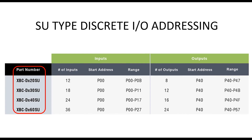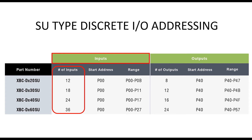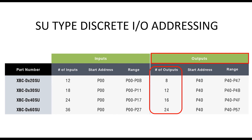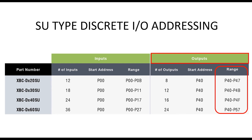Shown here are the SU type PLC models. The model's total discrete inputs are shown in this column. The inputs begin at P00 and are ranged according to PLC model. The total outputs for each model are listed in this column. As mentioned, the SU type outputs begin at P40, and the output range for each model is shown here.